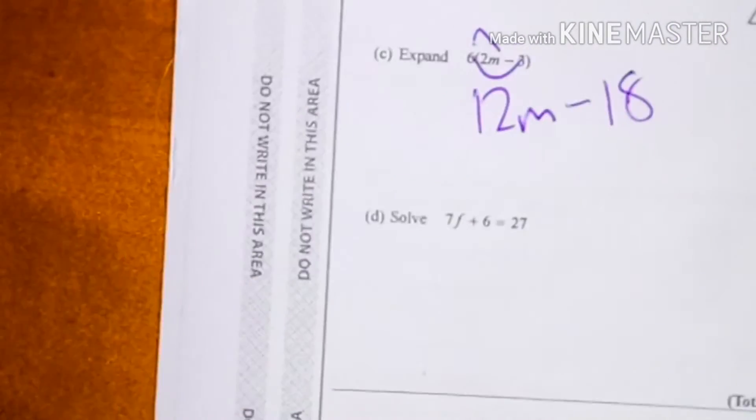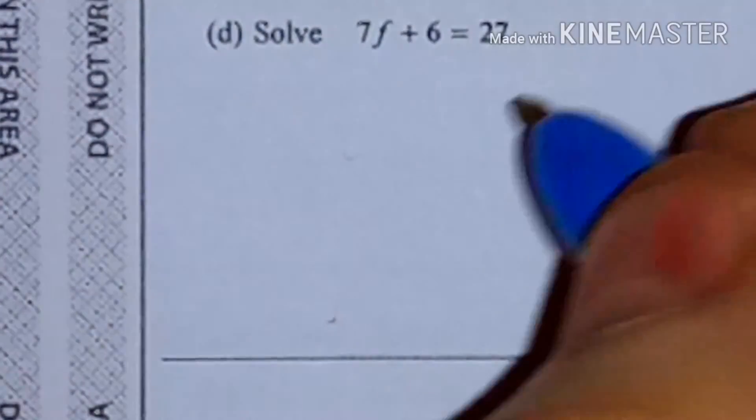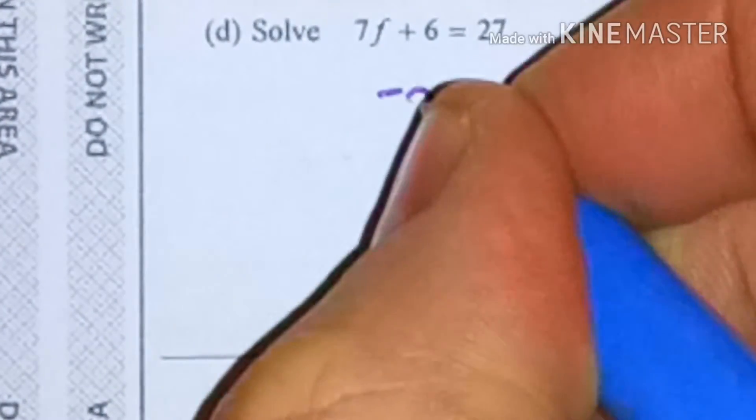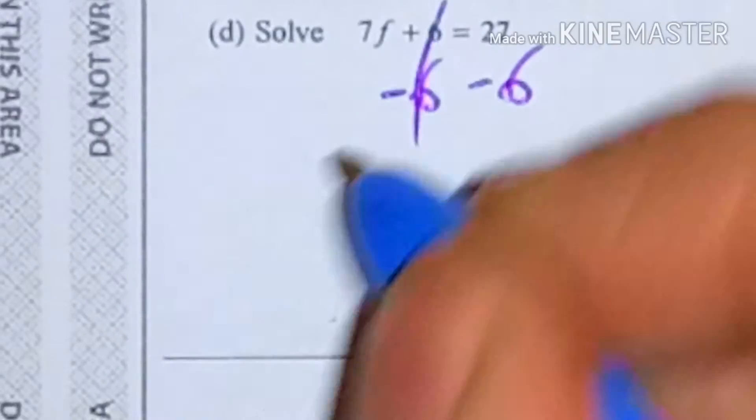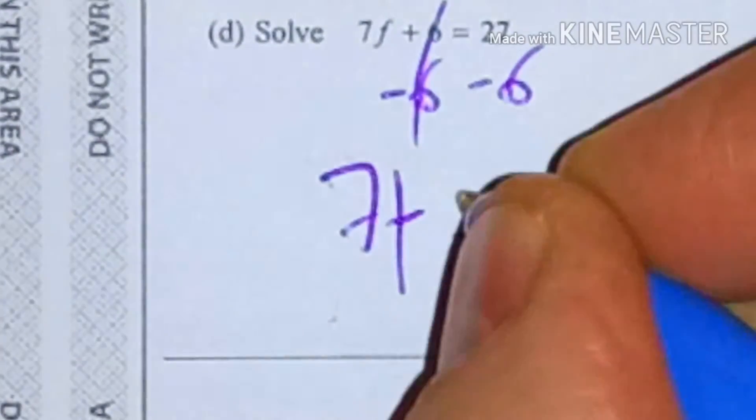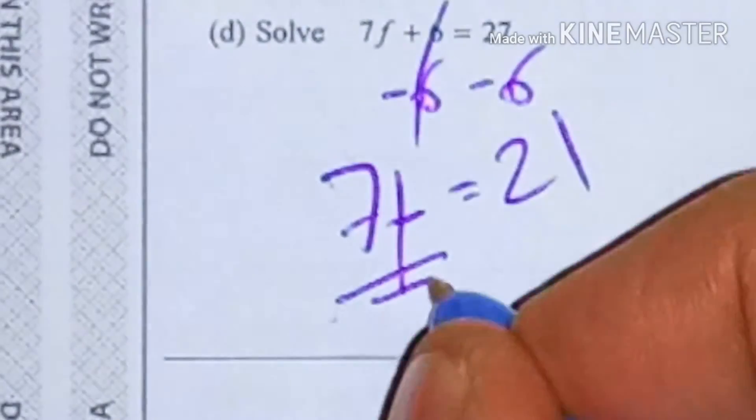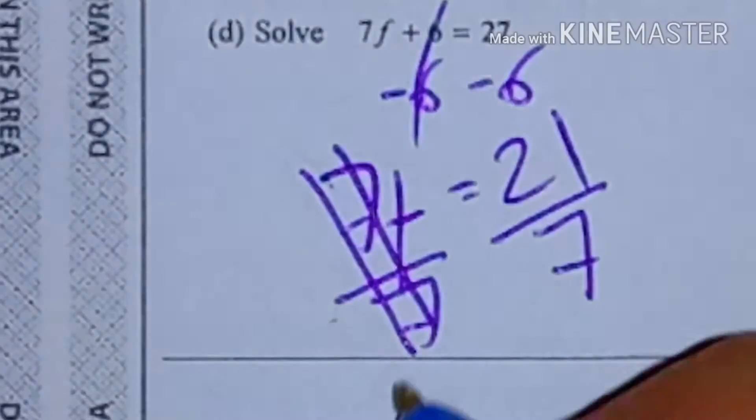Alright, solving. Hang on, I'm going to zoom in a little bit so I can be neater. Okay, so to solve it, minus 6 from both sides. These cancel out, so these are going to be 7f. 27 minus 6 is 21. Okay, so I've got to divide both sides by 7. These cancel out, which gives me f equals...